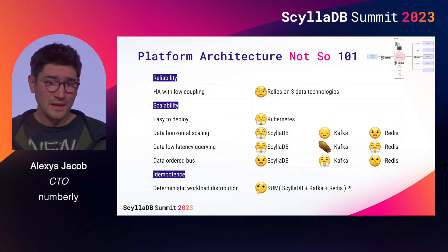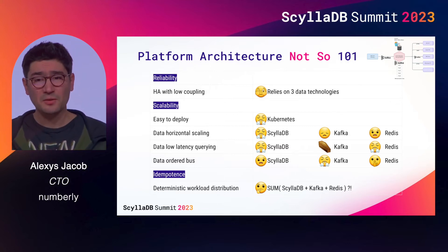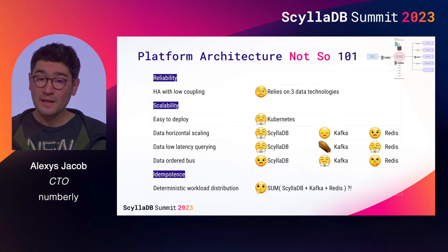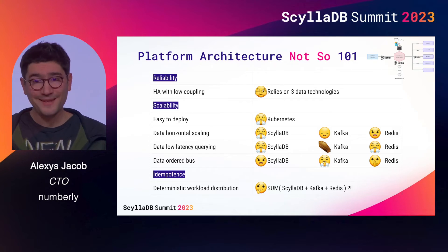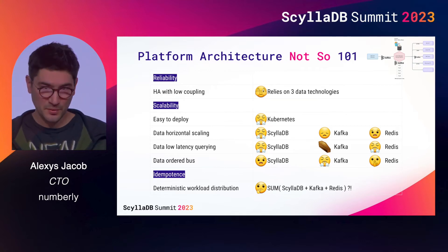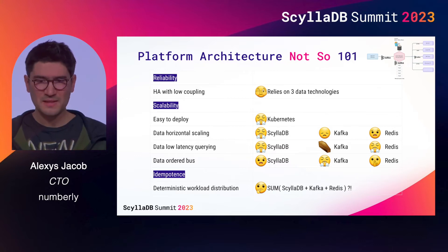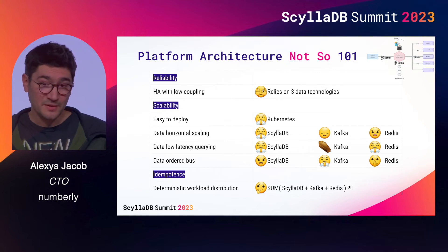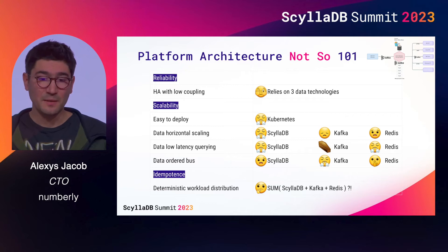Looking at reliability: three data architectures and technologies means three factors to design reliability upon, and each could fail for different reasons that our platform logic should handle. On the scalability side, we are lucky to have a data technology matching each constraint, but the combination of the three does not match reliability and idempotence — it adds too much complexity and points of failure to be efficiently implemented. Idempotence, as expected, becomes a nightmare when you imagine achieving it on such a complex ecosystem.